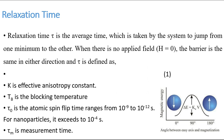As we already understand, the relaxation time tau is the average time taken by the system to jump from one energy minimum to another. It is restricted by a barrier called the anisotropic barrier of the system, and this barrier changes with the volume of the particle. If we have a small particle, the barrier is small. This is expressed as delta equals K multiplied by V, where K is the anisotropic constant of the system — different for different materials — and V is the volume of the nanoparticle.